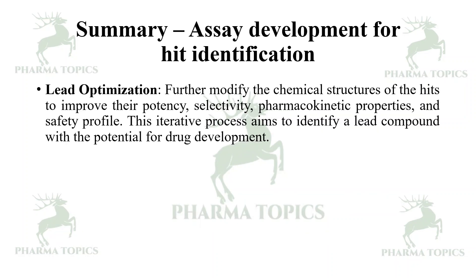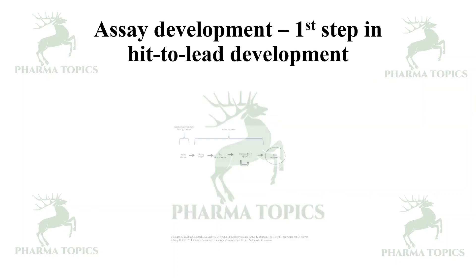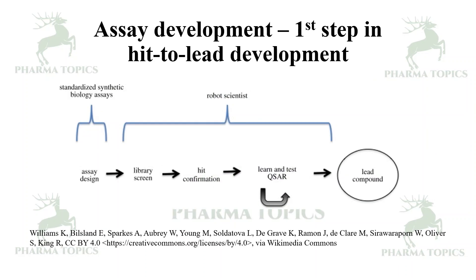Lead optimization involves optimizing the functional groups to improve the pharmacokinetic and pharmacodynamic properties of the compound. Hit expansion and characterization involves conducting additional studies to characterize the hits and gain a deeper understanding of their mechanism of action and potential therapeutic applications. In summary, designing the assay is very crucial when you want to screen a large number of compounds, confirm hits, and proceed through the next stages of drug discovery to arrive at a successful lead compound. Assay development is the first step in hit-to-lead development.